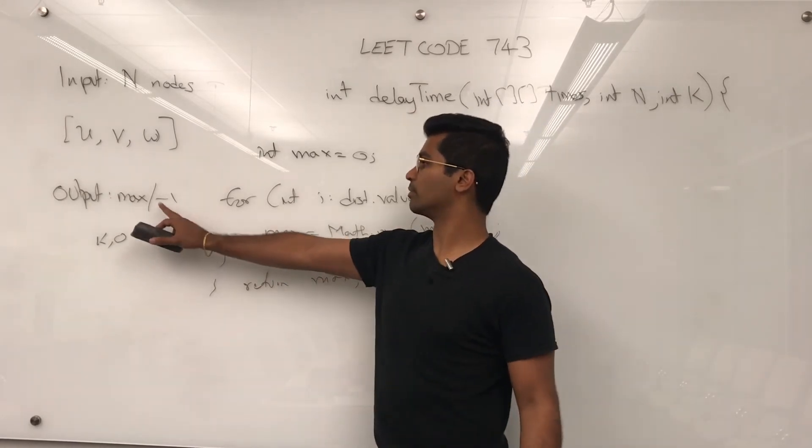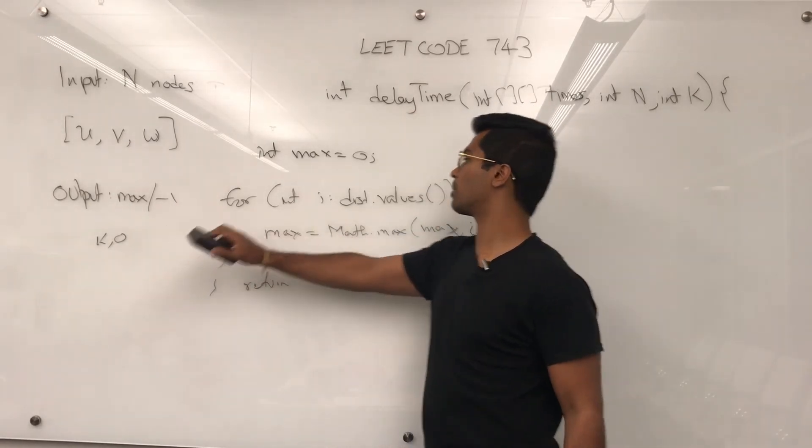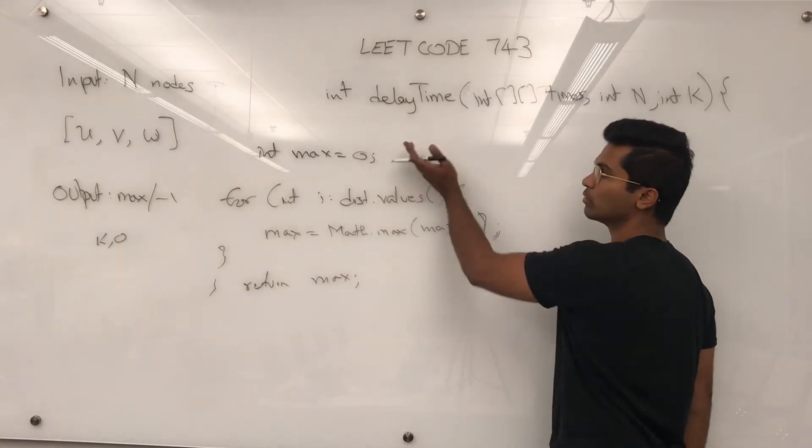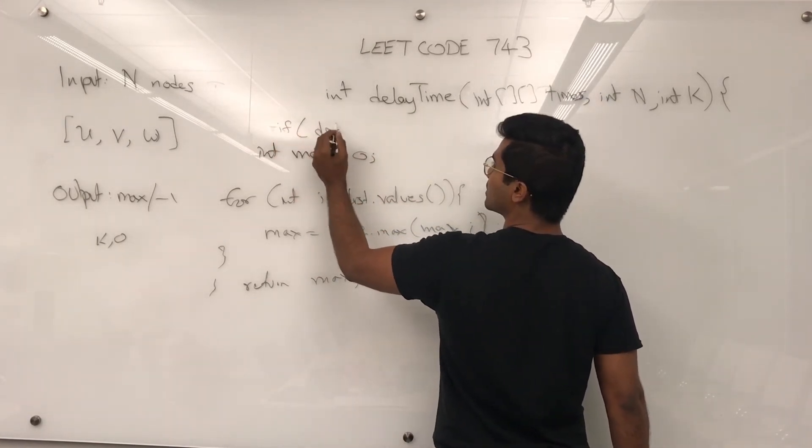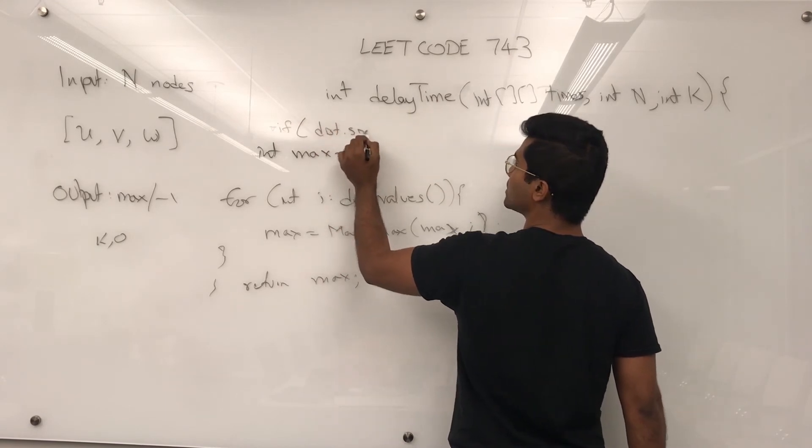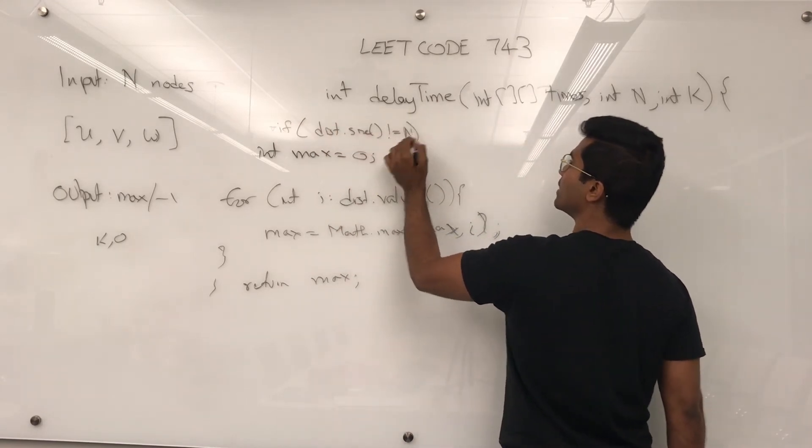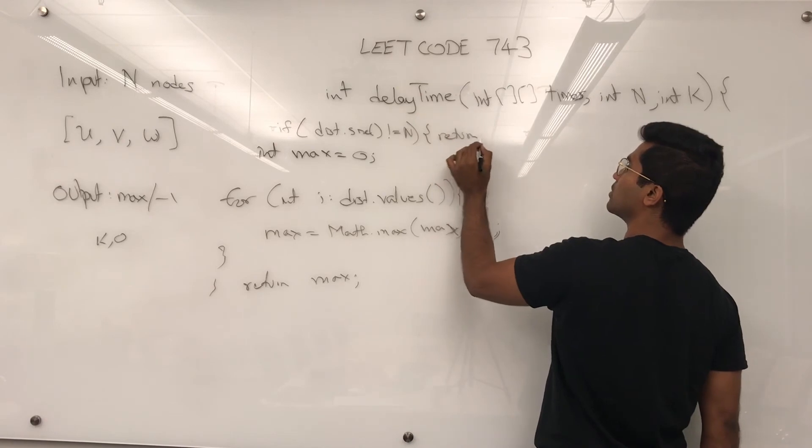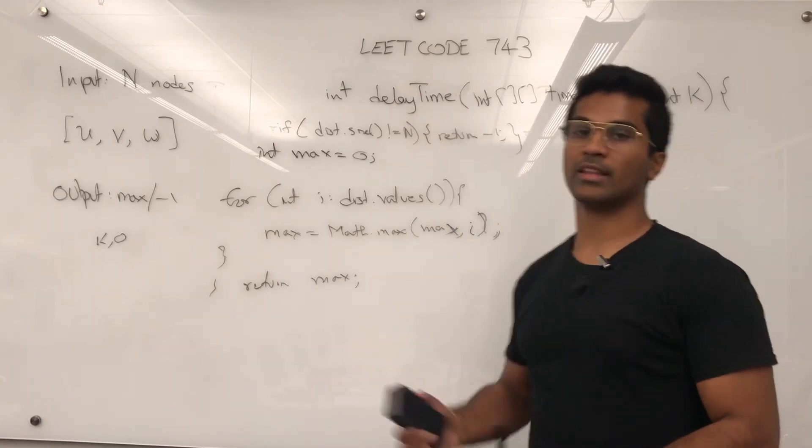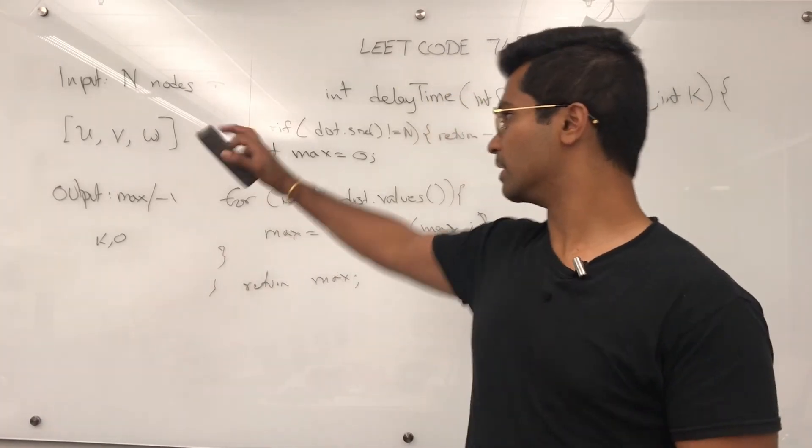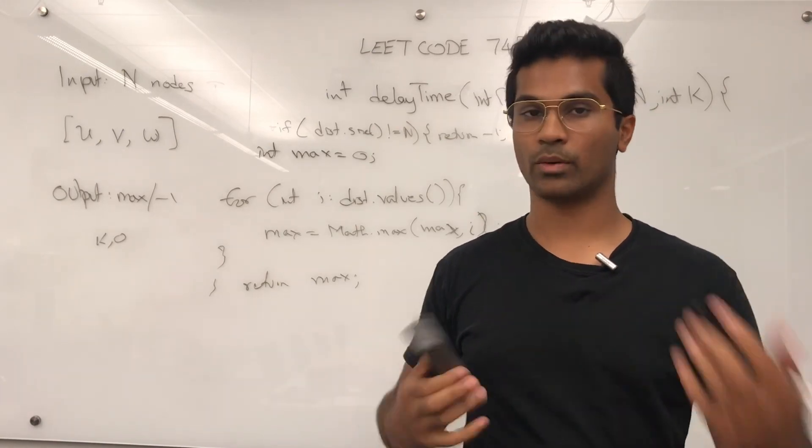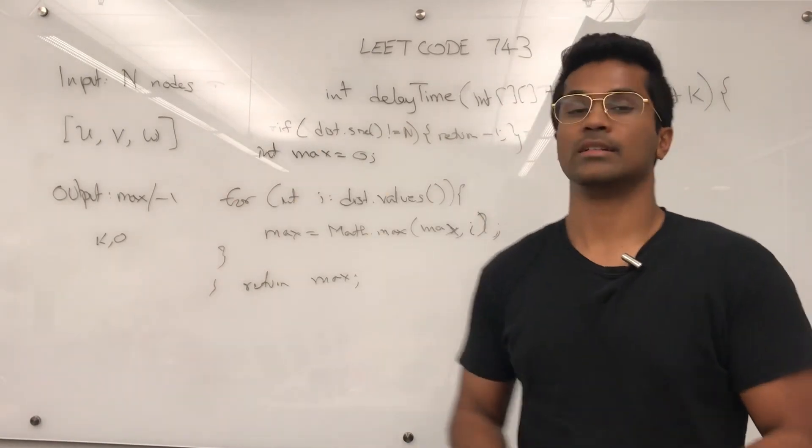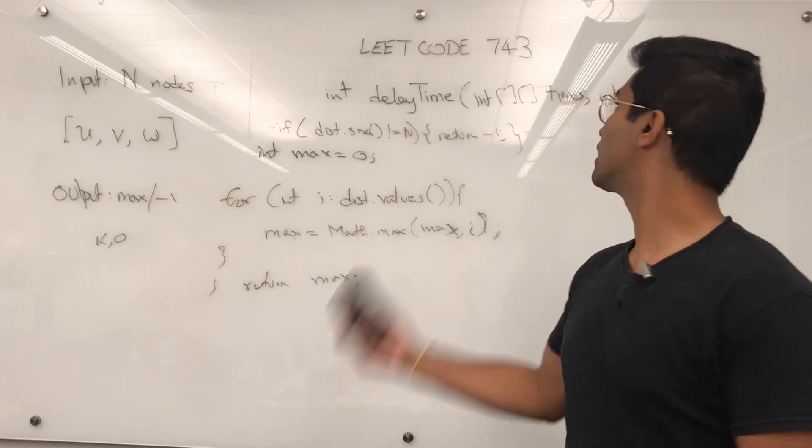if we have to consider the case where something is not possible, in that case, what we should do before this is see if distance's size is not equal to n. If it's not, we return negative 1. What this means is that there has been at least one node in the given matrix that is not reachable. And because if it was reachable, then it would have been added into distance. that's pretty much how you solve LeetCode 743.